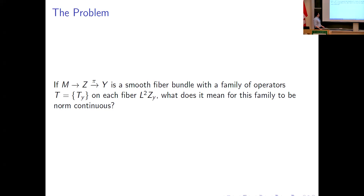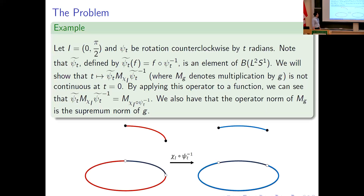Once you do this, you end up with a couple of questions. One, my operators are now on each fiber L²(Z_y), so they're not even on the same space — what do I mean for this to be continuous? Well, because it's a fiber bundle, I'm going to locally trivialize. I would like this to be continuous under local trivializations, and herein lies the meat of the problem, because once you start talking about local trivializations, you have weird problems. So I want to start with this example.